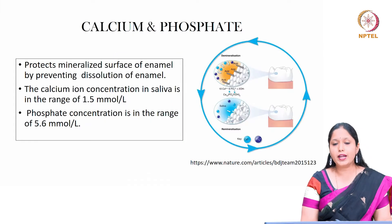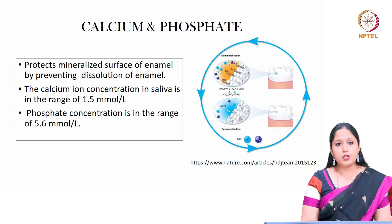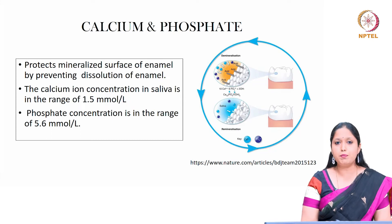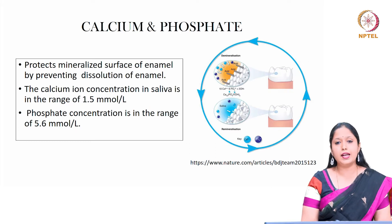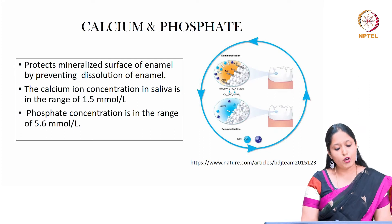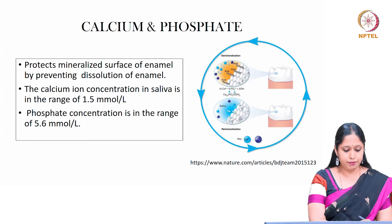Let us see each inorganic component in detail. First is calcium and phosphate. Calcium and phosphate protect the mineralized surface of enamel and prevent its dissolution. The calcium ion concentration in saliva is in the range of 1.5 millimoles per liter, whereas the phosphate concentration is 5.6 millimoles per liter.